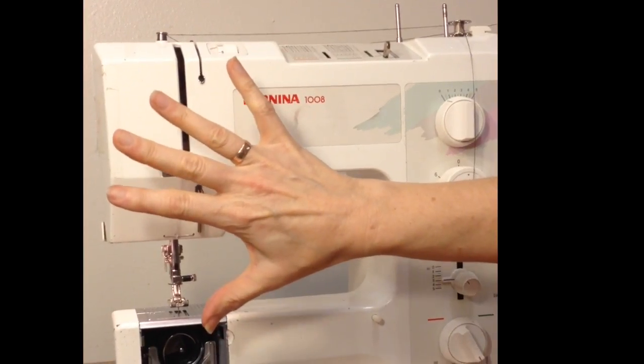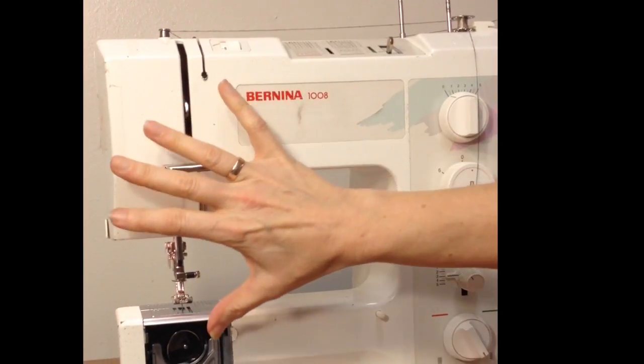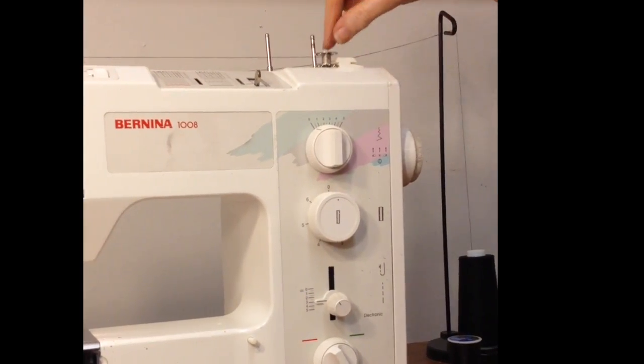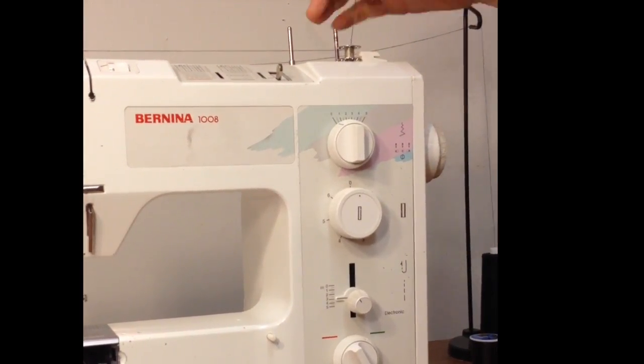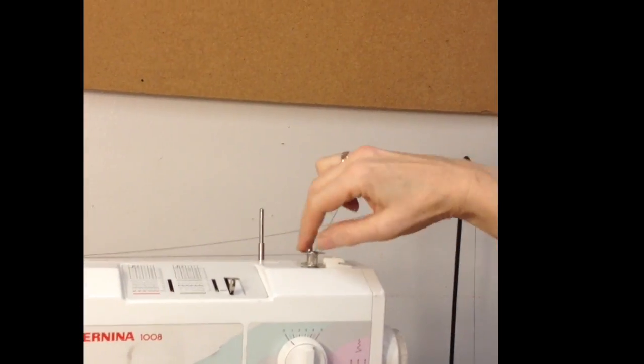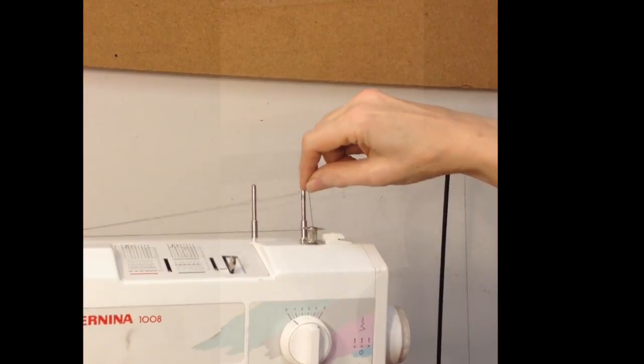Right now, they're isolated. They won't move while we wind the bobbin. I'm going to hold onto this thread so it doesn't get sucked in and wound around because that makes a mess. I'm going to hold this up. So the gas pedal that is down on the floor is what you press on to make the machine go.